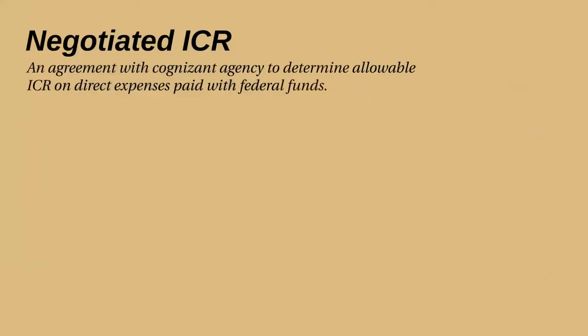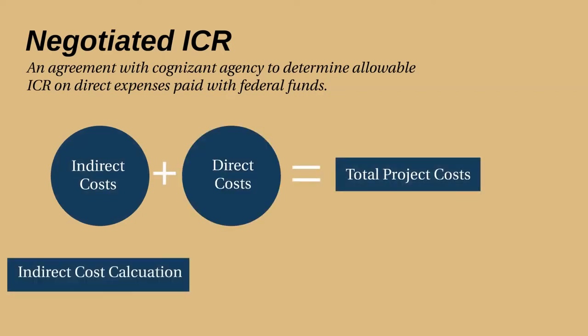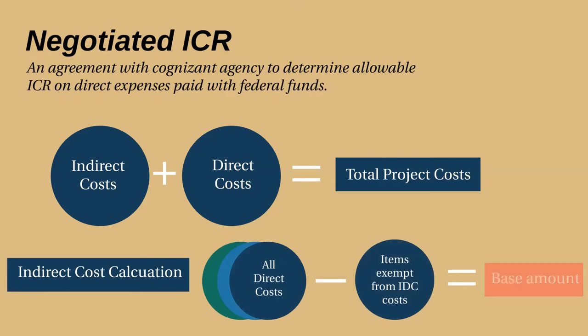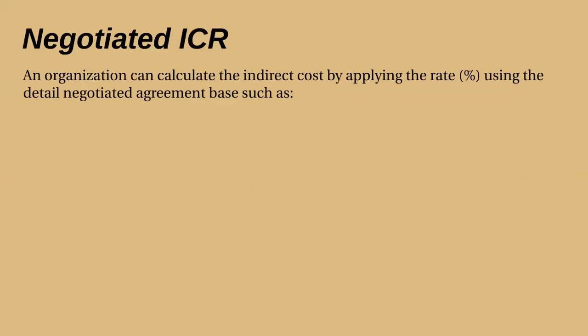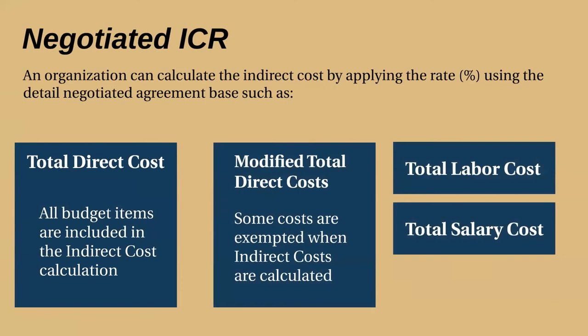Now let's talk about the negotiated ICR. A negotiated ICR is an agreement the entity enters with the cognizant agency to determine the entity's allowable ICR on direct expenses paid with federal funds. To calculate indirect costs: indirect costs plus direct costs equal total project costs. A base amount is determined by adding together all direct costs minus any items exempt from indirect costs. Then you multiply the base amount by the indirect cost rate to get the total indirect costs. An organization can calculate indirect costs by applying the rate using the detailed negotiated agreement base, such as total direct costs, modified total direct costs, total direct labor costs, or total salary costs.